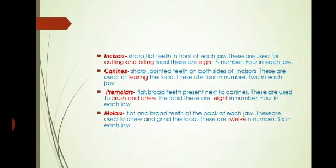Now third type is premolars. These are flattened, broad teeth present next to the canines. They crush and chew the food. There are 8 premolars, 4 in each jaw.